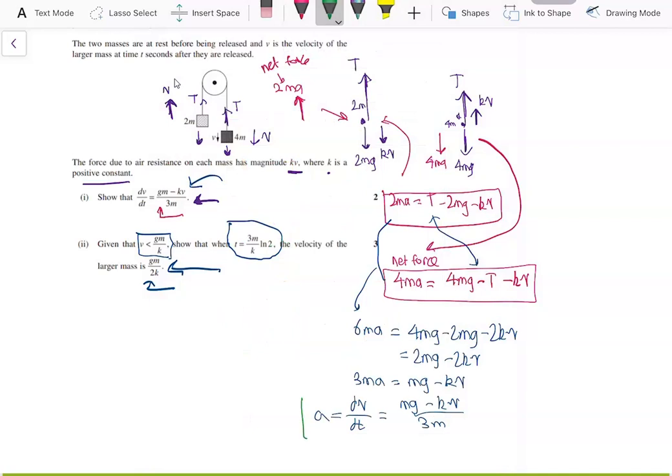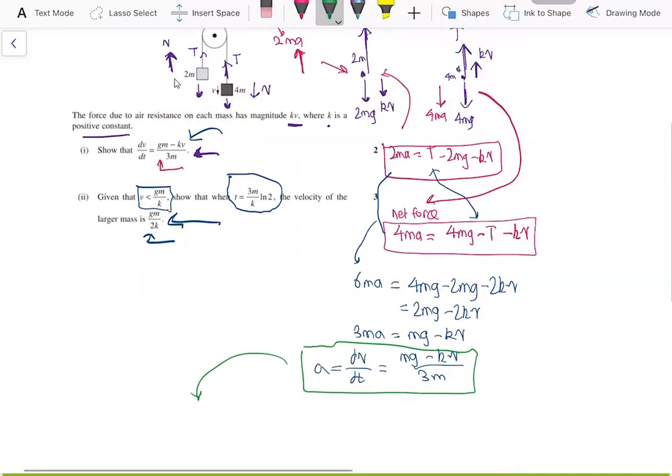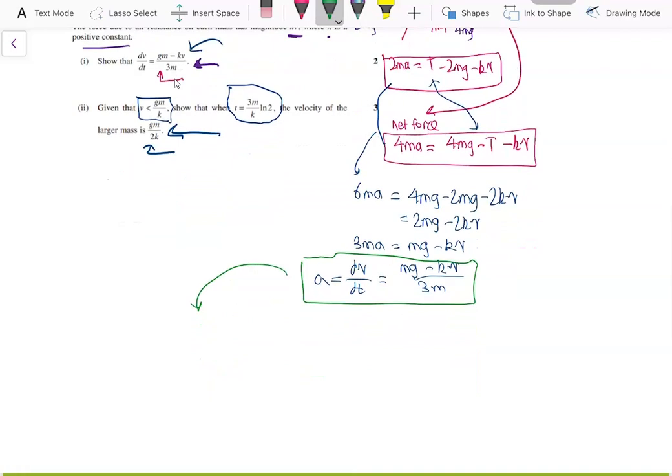So we have an expression for the rate of change of velocity. And we can actually solve this differential equation by bringing everything in terms of v's to one side. So we can write it as the integral, we can move the 3m and this mg minus kv over to the left hand side and move dt to the right hand side and take the integral of both sides to solve this differential equation.